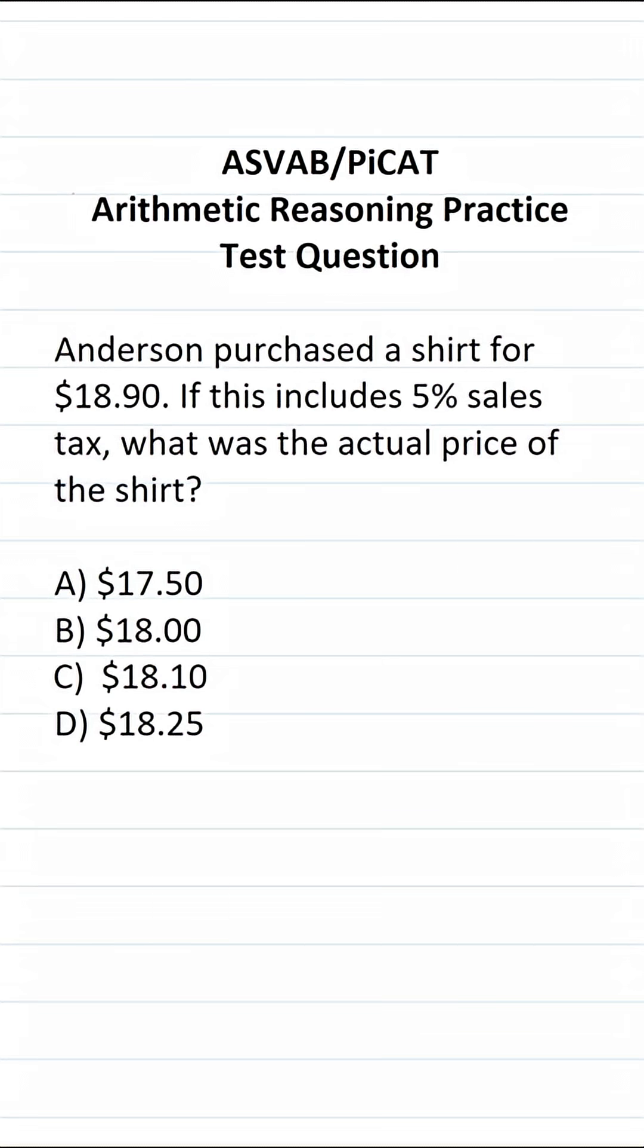This arithmetic reasoning practice test question for the ASVAB and PiCAT says, Anderson purchased a shirt for $18.90. If this includes 5% sales tax, what was the actual price of the shirt?